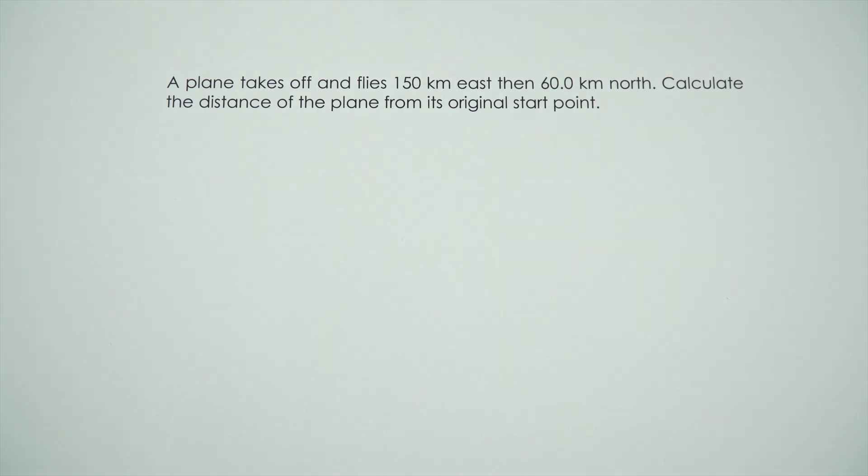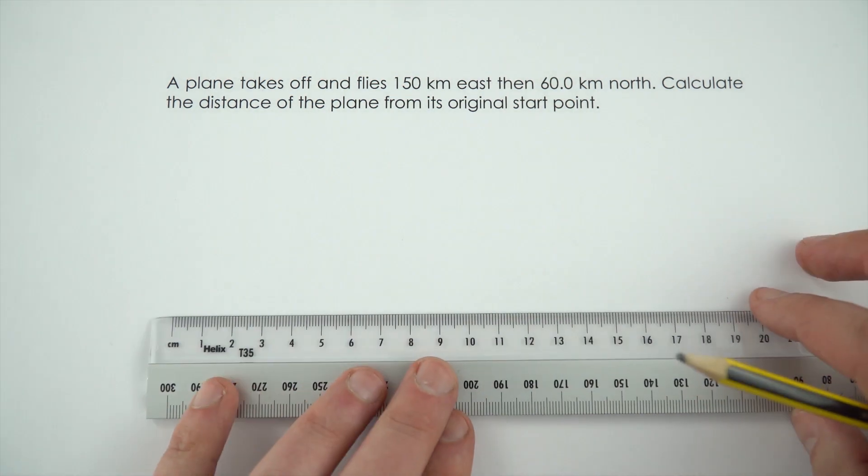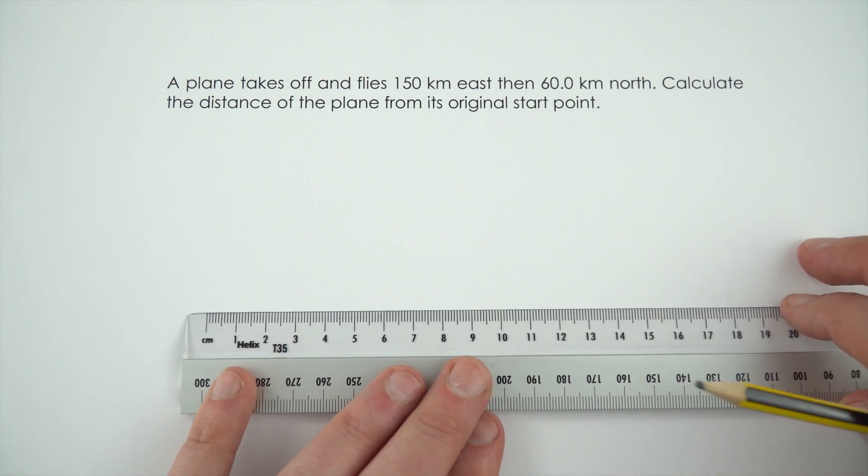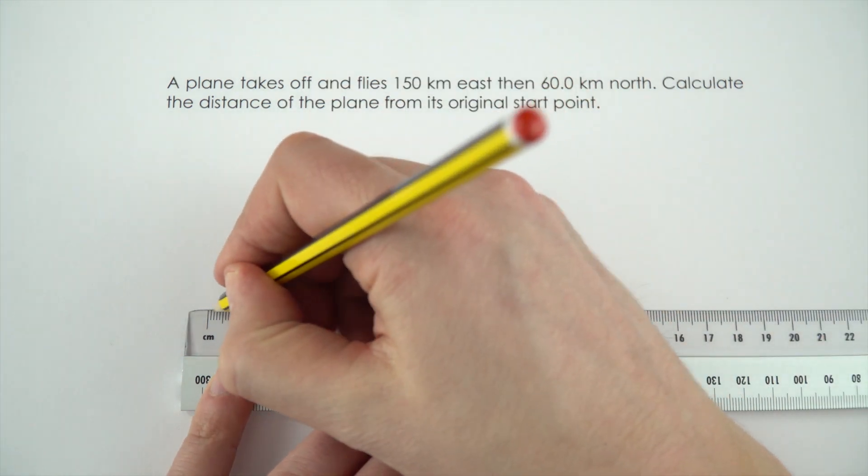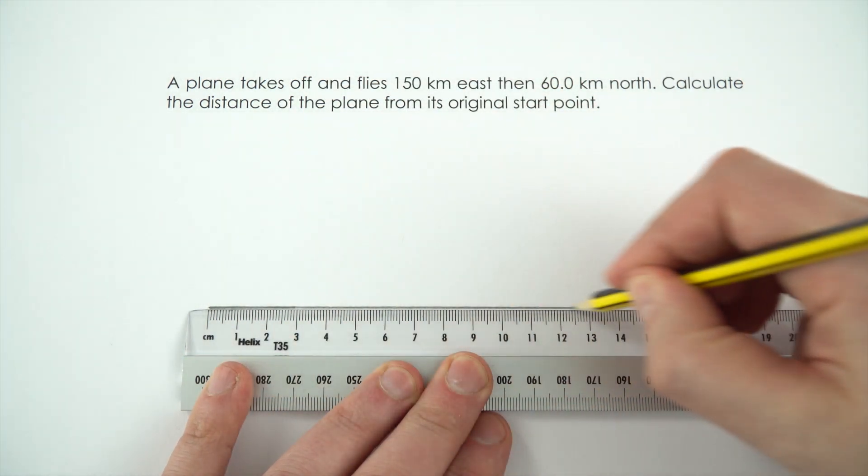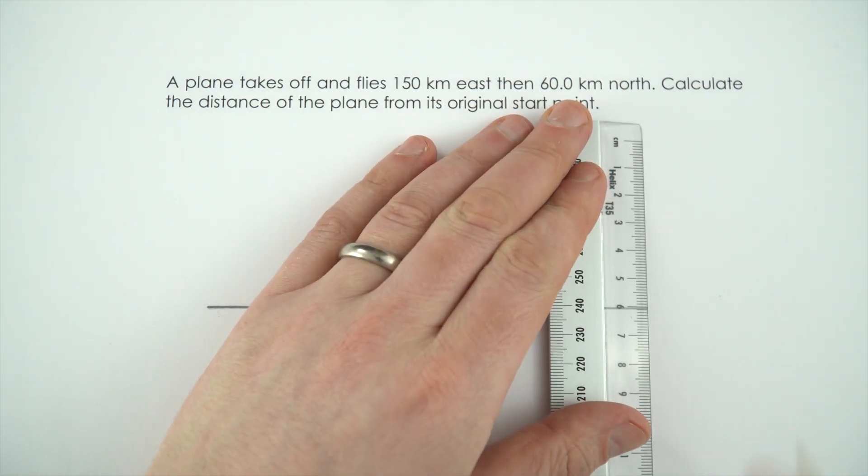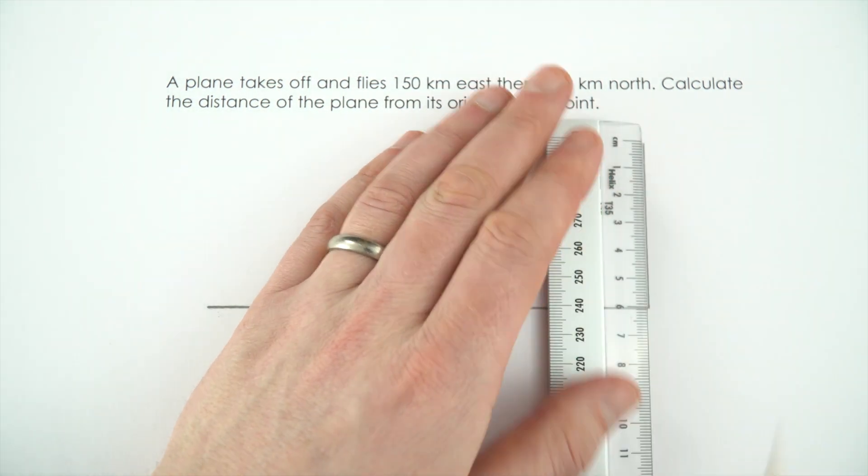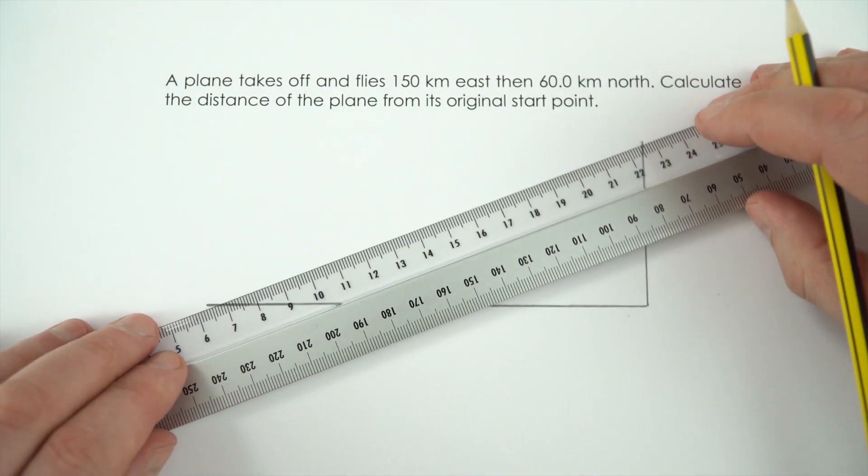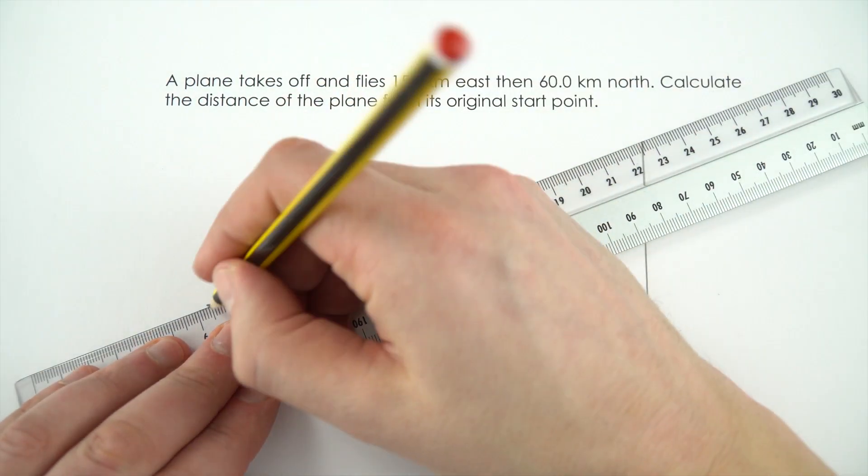Now the first thing for a question like this is I'm just going to draw a large diagram. Make it big then you can label everything appropriately and if you start off right it's less likely that you're going to make any mistakes. So I'm just going to go along 15 there and up 6 and then I'm just going to finally draw in the last side of where this plane has gone.